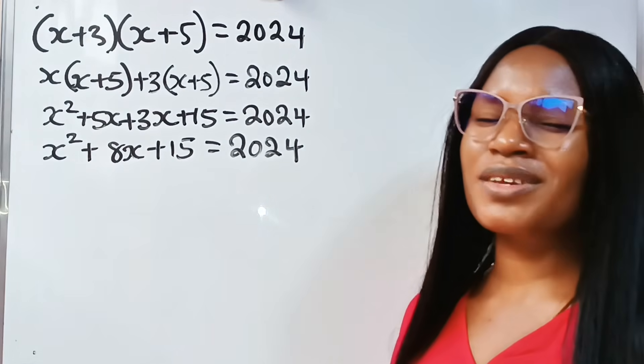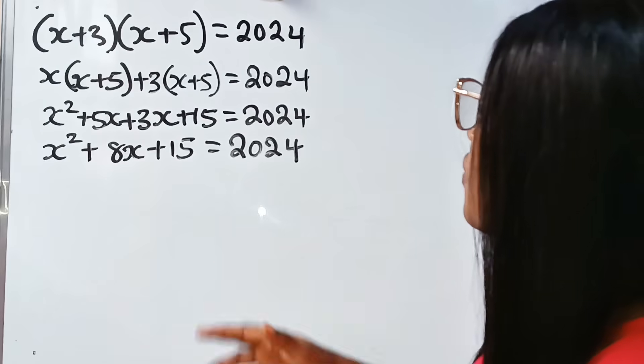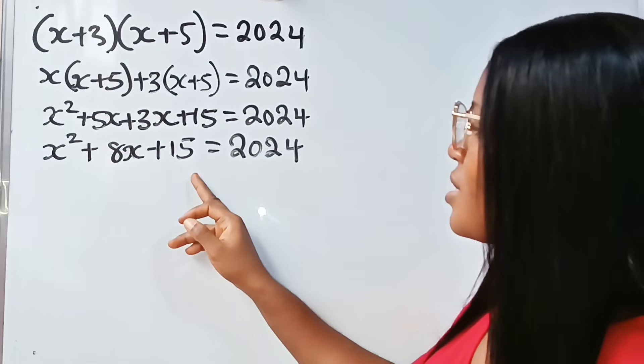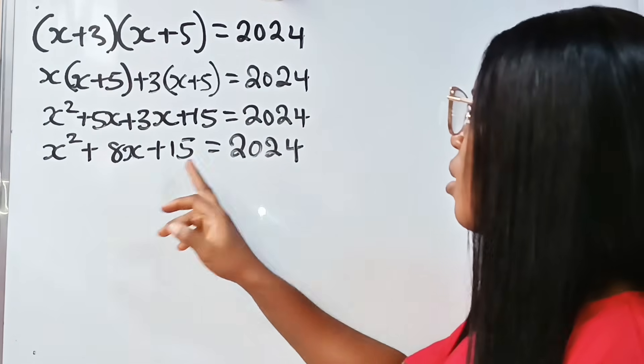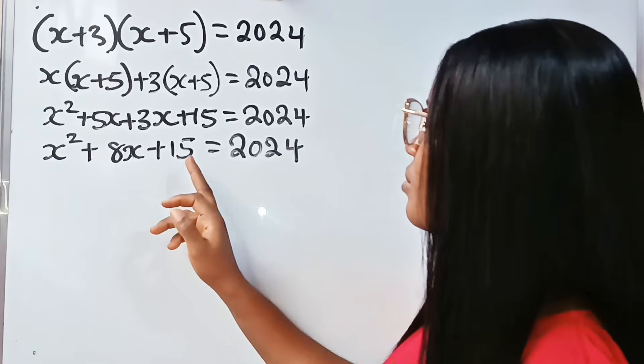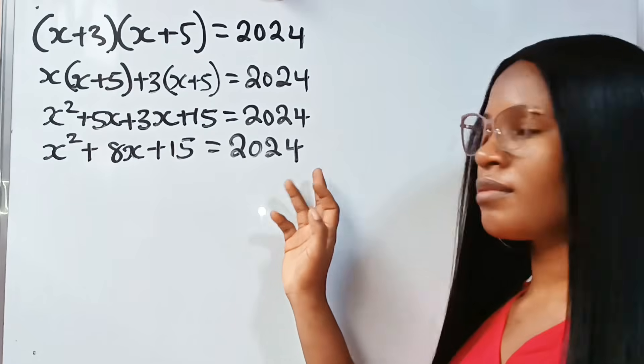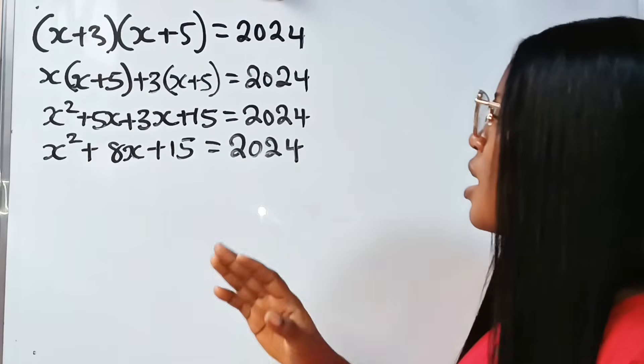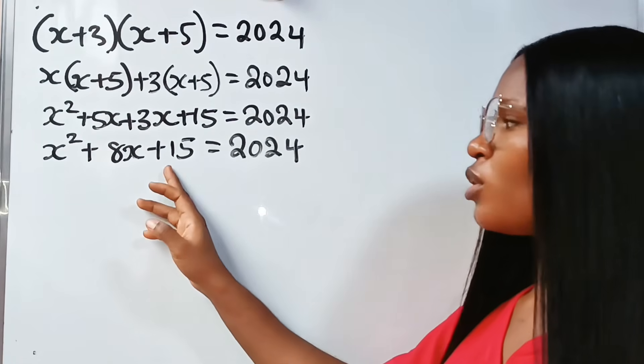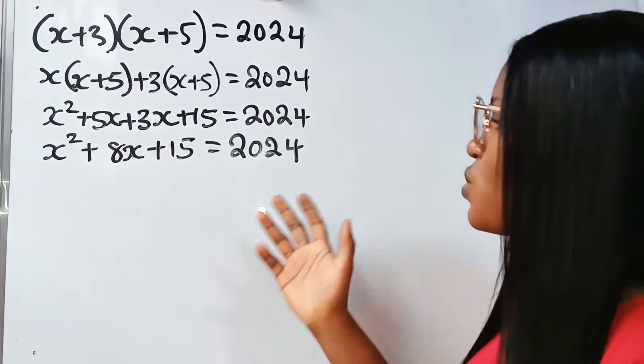I would have been tempted to transfer this to the other side, getting minus 2009. But that will be a big number to solve. So I need to think, how else can I solve this to get the two values of x?